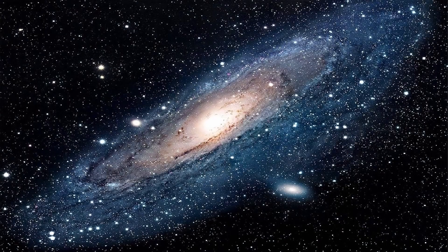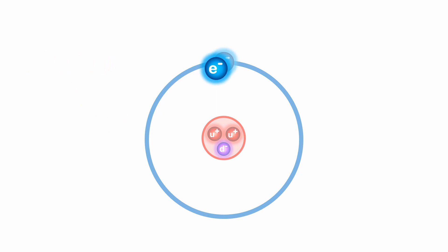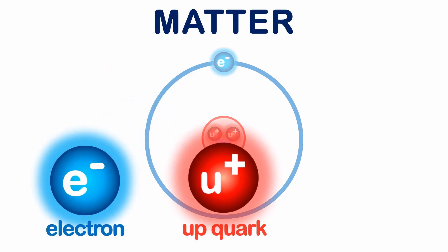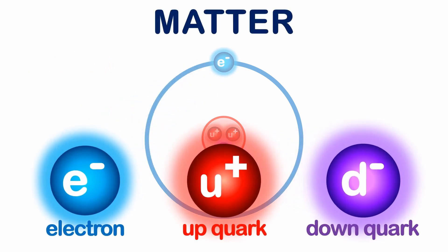So what is antimatter? Well, think of the normal matter in our universe, made of atoms. Normal atoms are made of electrons, up quarks, and down quarks.